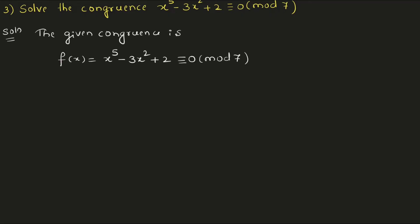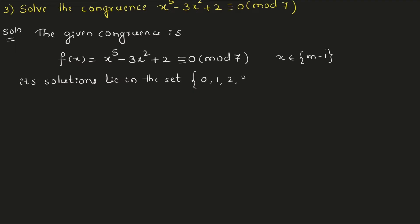The given congruence is f(x) = x⁵ - 3x² + 2 ≡ 0 (mod 7). As I said, the solution set of this function f(x) lies in the set which belongs to m minus 1. Your m minus 1 means 7 minus 1, that is 6. So possible solutions of x are between 0 to 6. The solution set lies in the set 0 to 6.